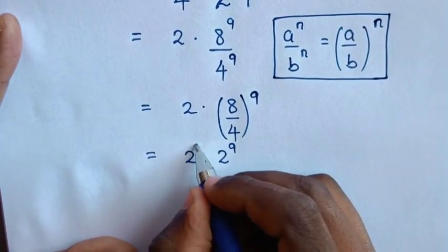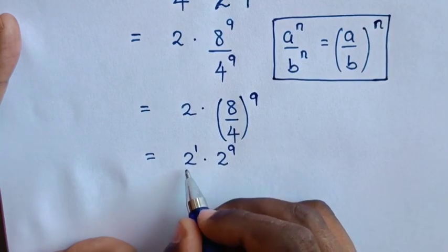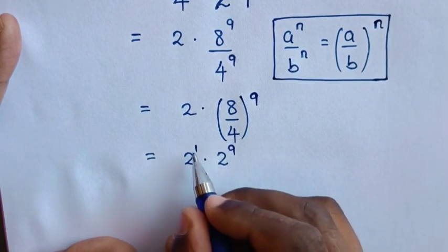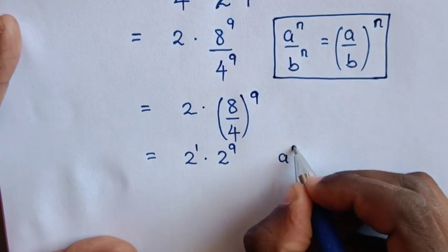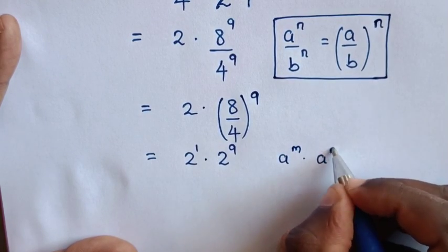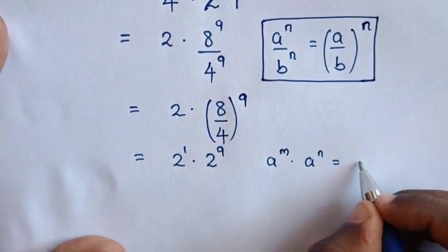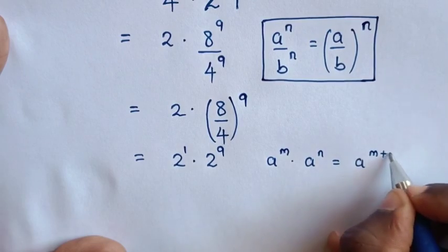Then this 2 is same as 2 power 1. Now this is multiplication of exponents with same base but different power. So we'll apply the rule: a power m times a power n is equal to a power of m plus n.